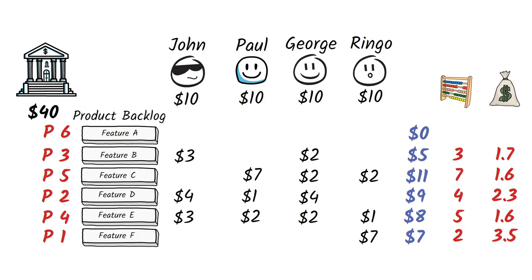Ordering by return on investment allows us to deliver items in terms of best bang for our buck. Although Feature C has the largest total amount bid on it, it also has a large development cost, so it's further down the priority list. F is at the top of the list even though it's only important to one single stakeholder — but Ringo allocated 70% of his budget to it, so it's obviously really critical to him. A has had no development dollars bid against it, so it's at the bottom.